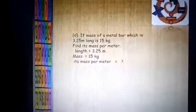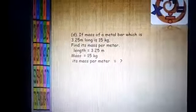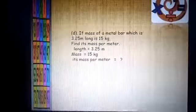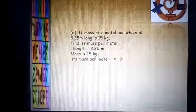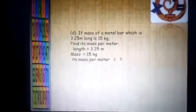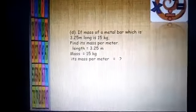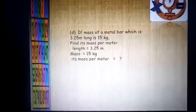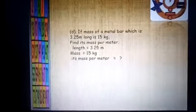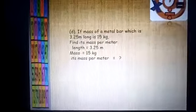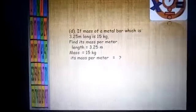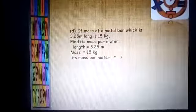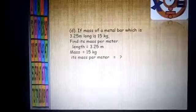Now part D. If mass of a metal bar which is 3.25 meter long is 15 kg, find its mass per meter. The length of the metal bar is 3.25 meter. Mass is equal to 15 kg. Its mass per meter, how you will find it? Watch the video again.